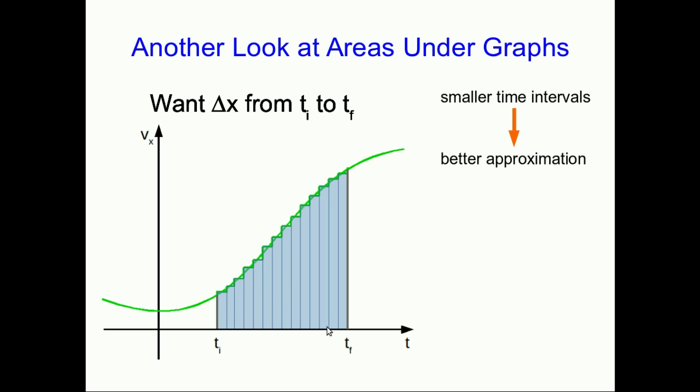So taking smaller time intervals, I'll call them this lowercase delta t, gives us a better approximation. And we can just keep doing this. We're going to get closer and closer to the true delta x. And notice we're also getting closer and closer to the area under the curve. And so the area under the curve always gives us the true delta x.